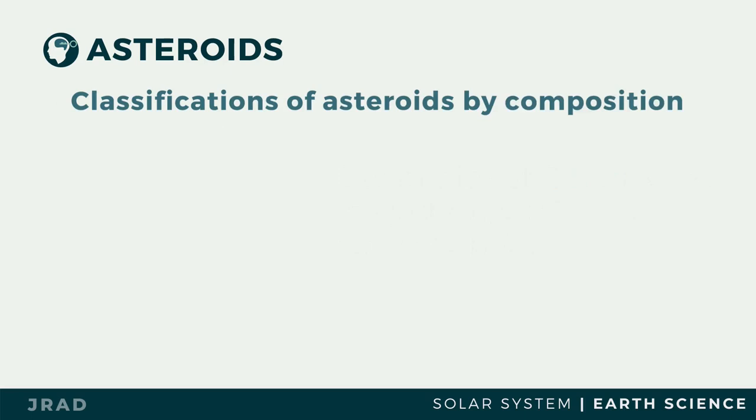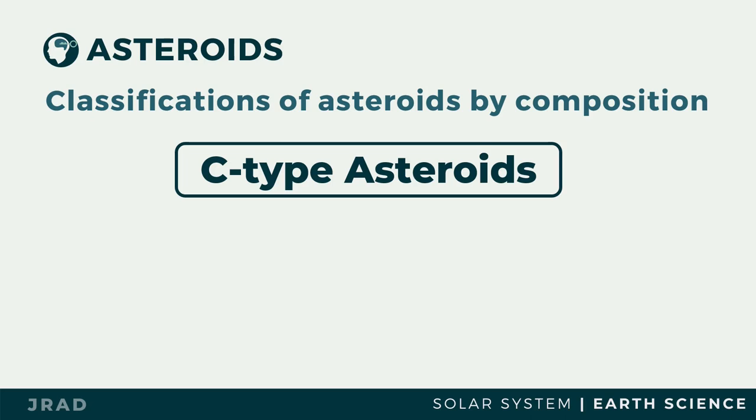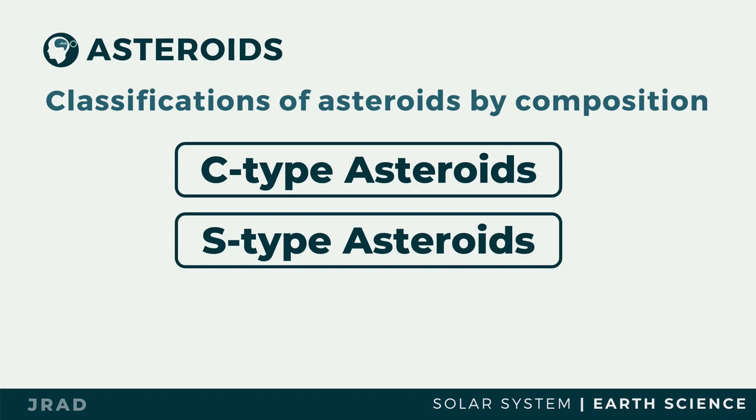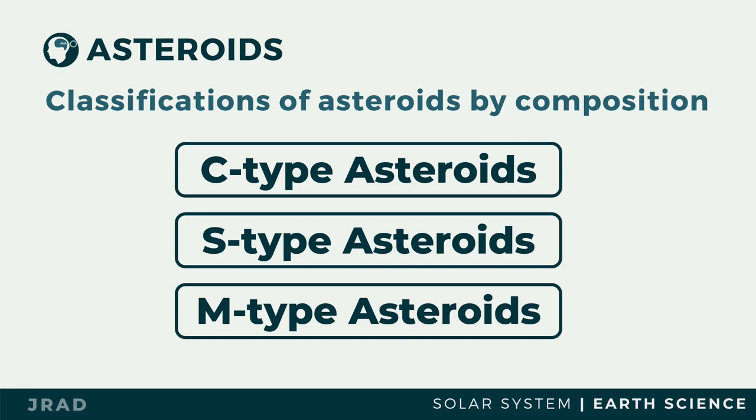There are three known types of asteroid. A C-type asteroid has a similar composition to the Sun's, which is depleted in hydrogen, helium, and other volatiles. An S-type asteroid is relatively bright and is made up of silicate materials and nickel-iron; it dominates the inner asteroid belt. An M-type asteroid includes the rest of the known asteroids, is known as metallic, is also bright in color, and its composition is dominated by nickel and iron.